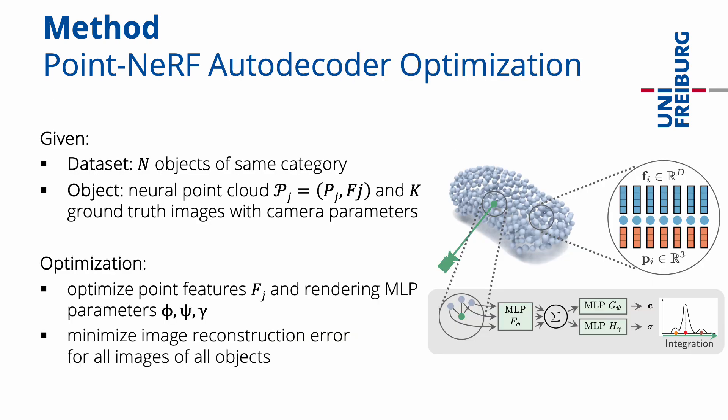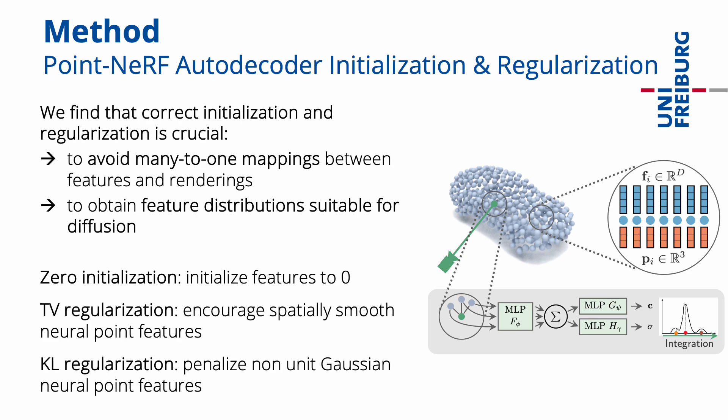The training of our method consists of two stages. First, we train the point NeRF in an auto-decoder fashion. The training dataset consists of N objects, each consisting of a neural point cloud and K images with known camera parameters. We optimize the point features of each object and the network parameters of the rendering MLPs with the objective of minimizing the image reconstruction error for all images of all objects. We find that correct initialization and regularization is crucial to avoid many-to-one mappings between features and renderings, and to obtain feature distributions suitable for diffusion. To this end, we initialize the features of all objects to zero and use TV and KL regularization.